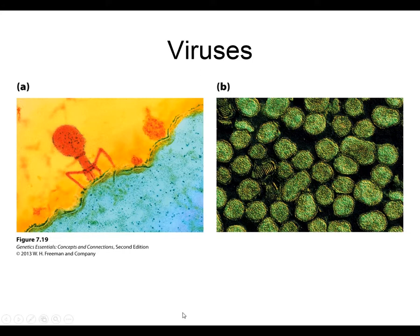There is one more way that bacteria can become recombinant. To summarize: transformation is free naked DNA that gets pulled into a cell and recombines onto the chromosome; conjugation is a direct transfer between living cells, where the DNA must then be incorporated into the recipient cell; and then there is virus, which can be a vector — a way that DNA can be transferred between cells.